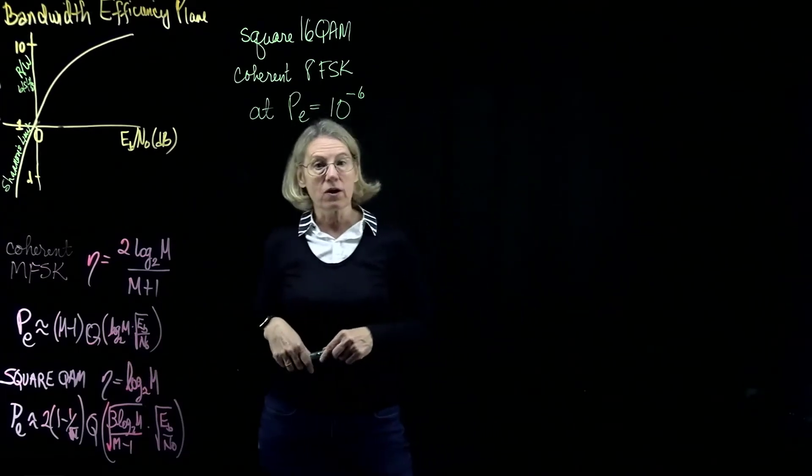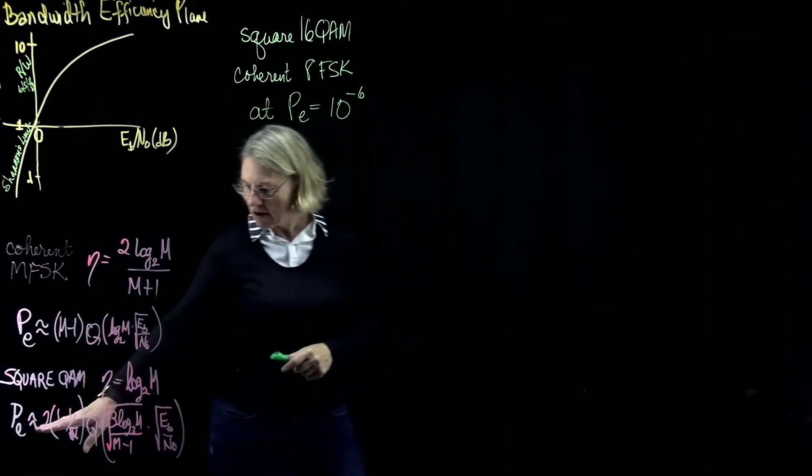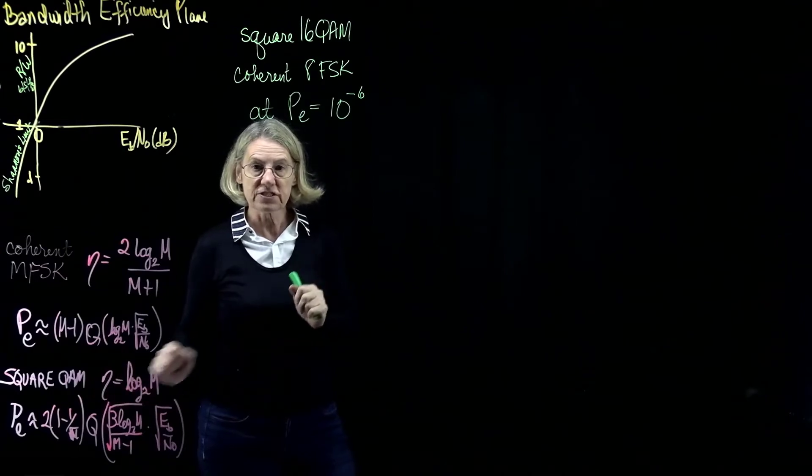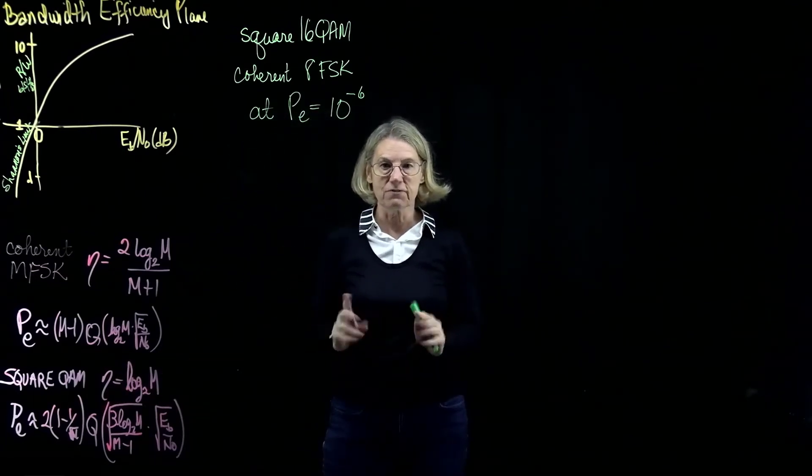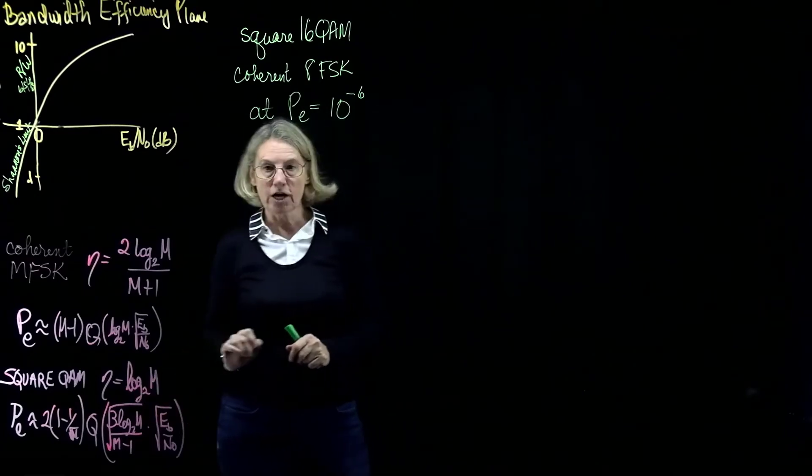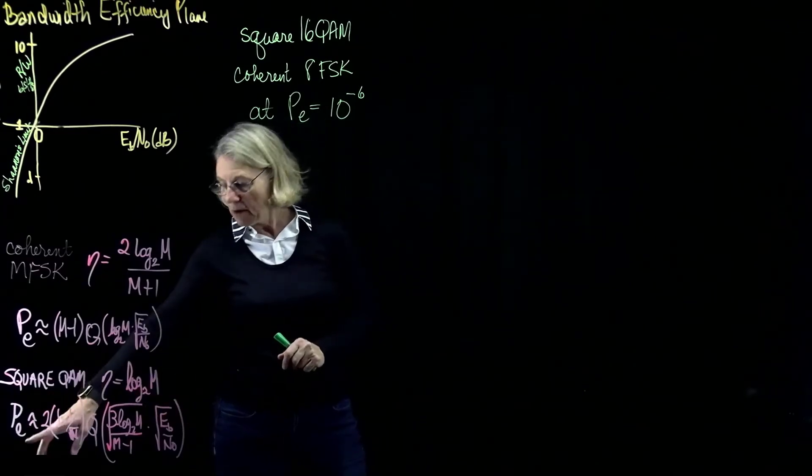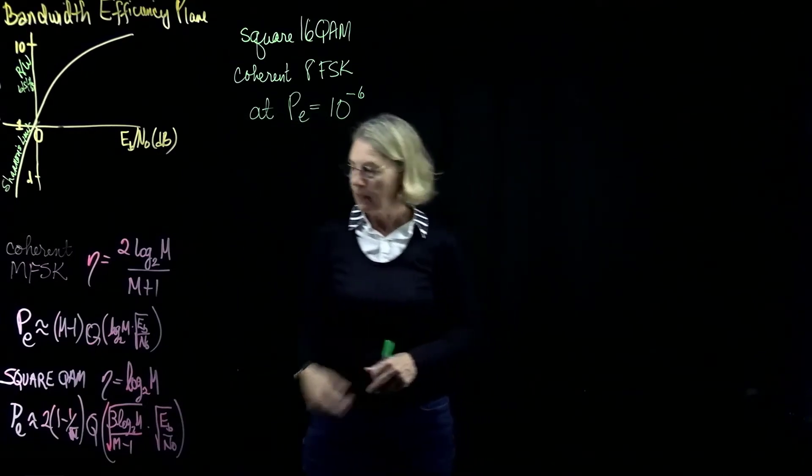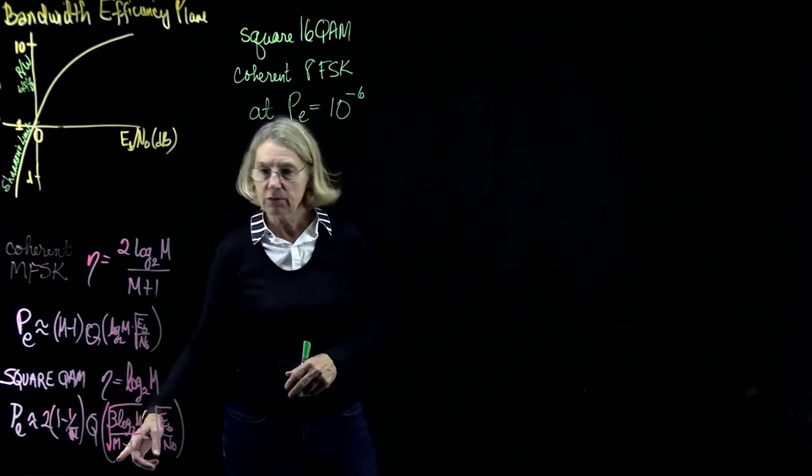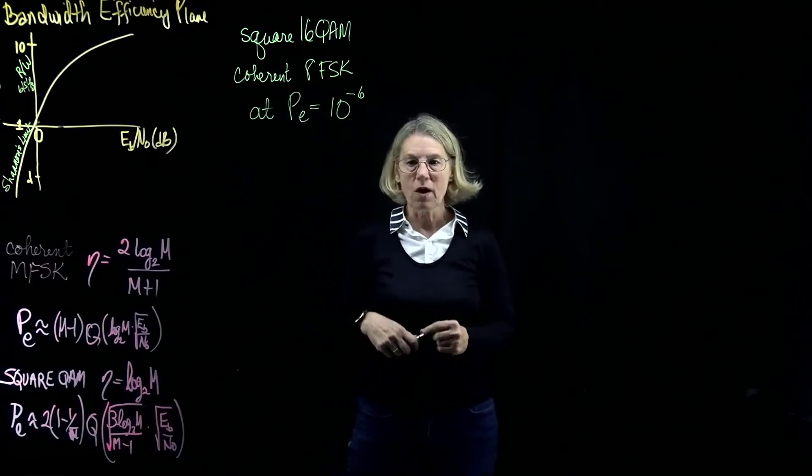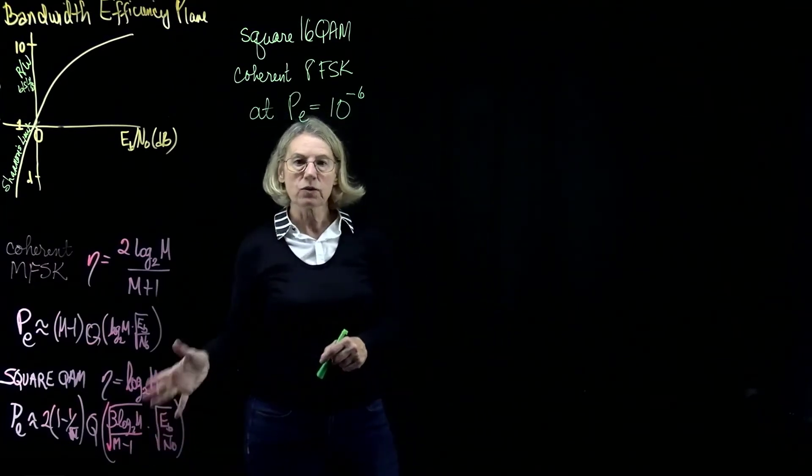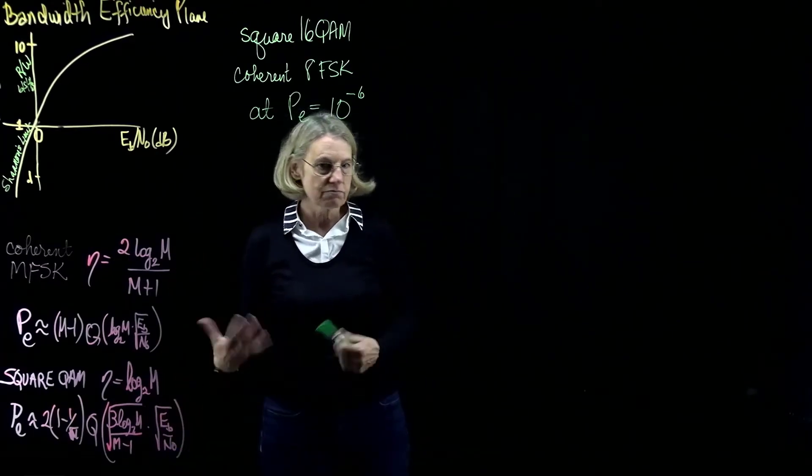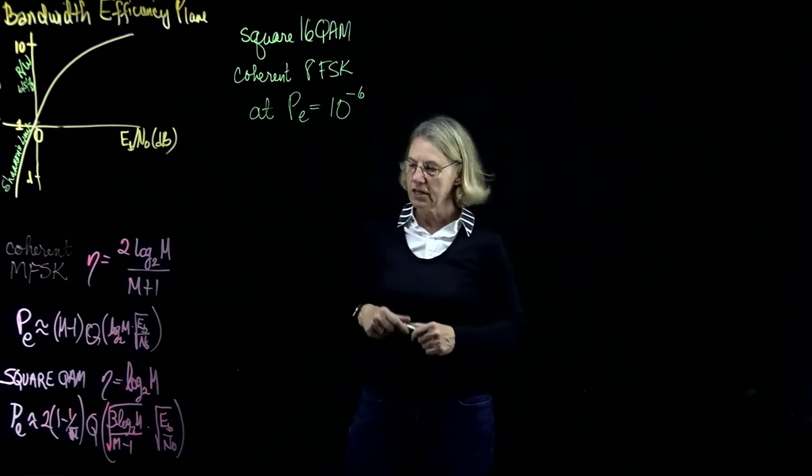I do the same thing for square QAM. Square QAM, they have a nice, neat equation there. Of course, first of all, the spectral efficiency for QAM does exactly the same as spectral efficiency for PSK, and that is given by log 2m. Now, the probability of error is given by 2 times 1 minus 1 over the square root of m, and the q function. Now I have the square root of 3 log 2m divided by m minus 1, and that is multiplying the square root of eb over n0. So again, these equations are available that you can consult with.